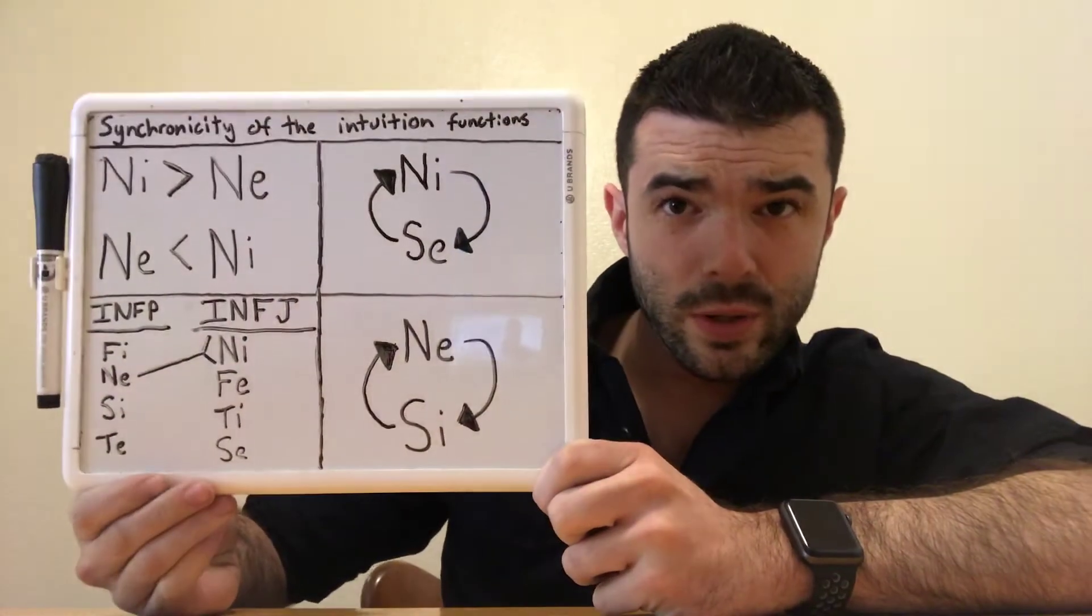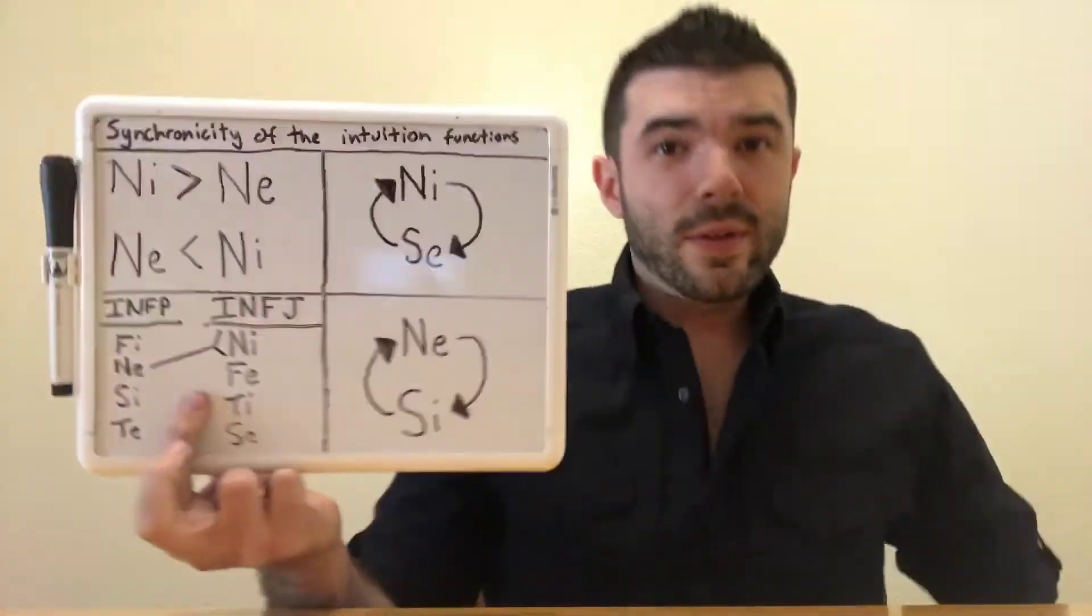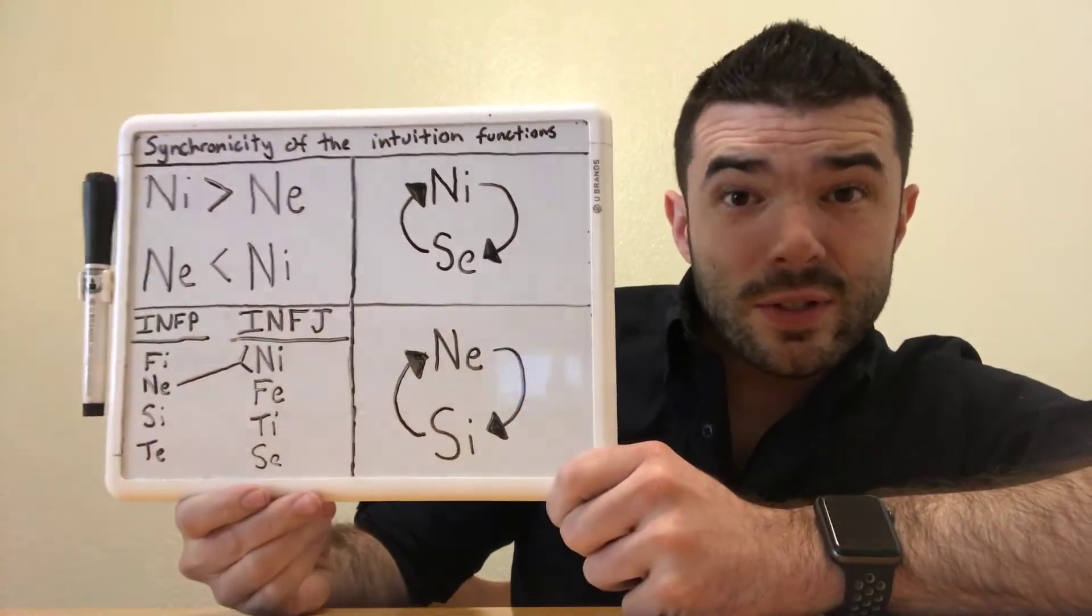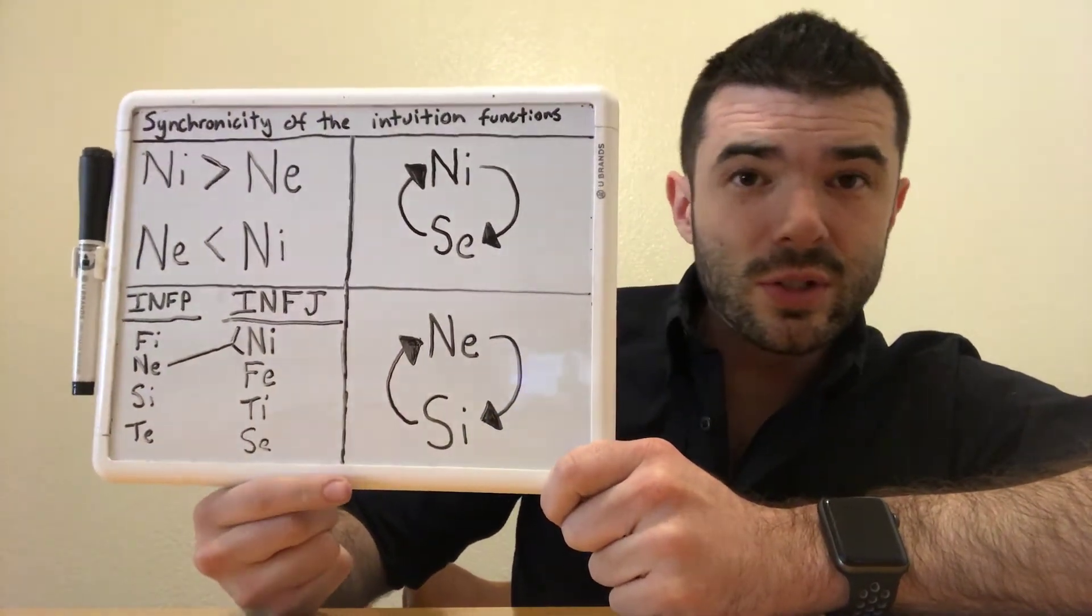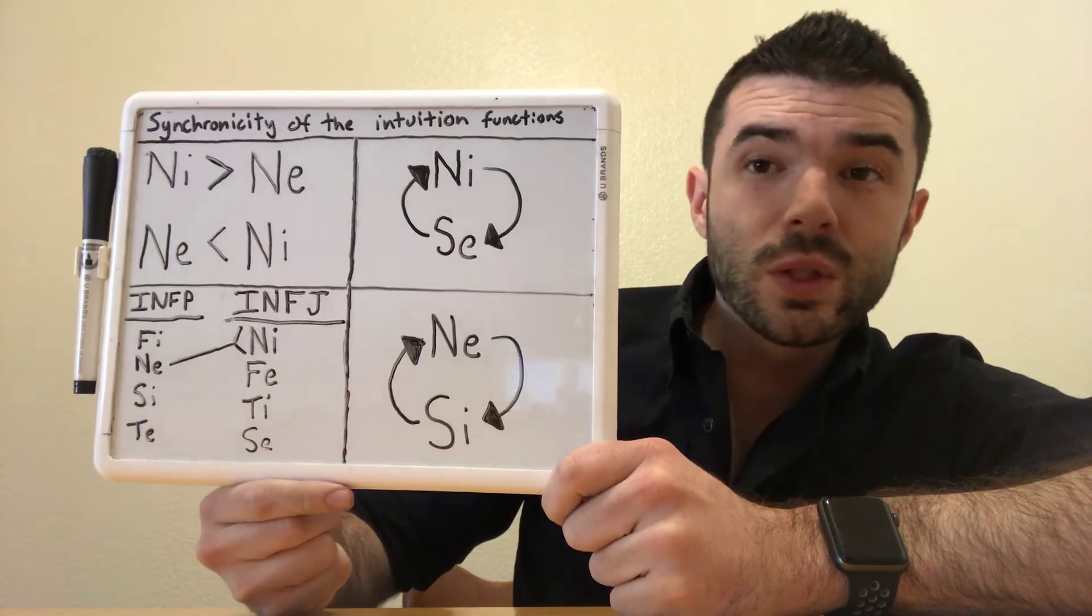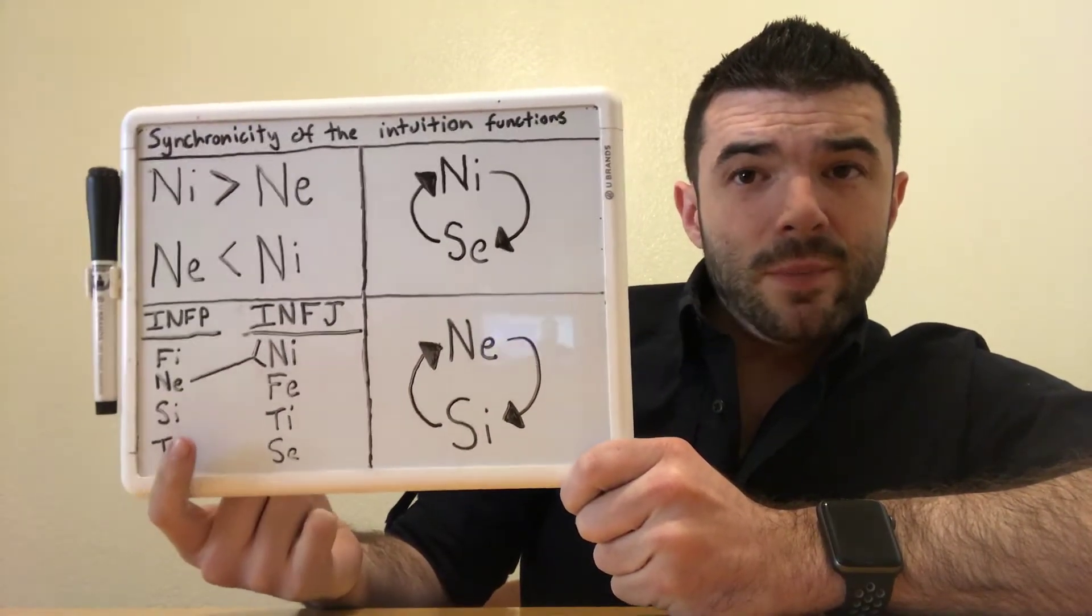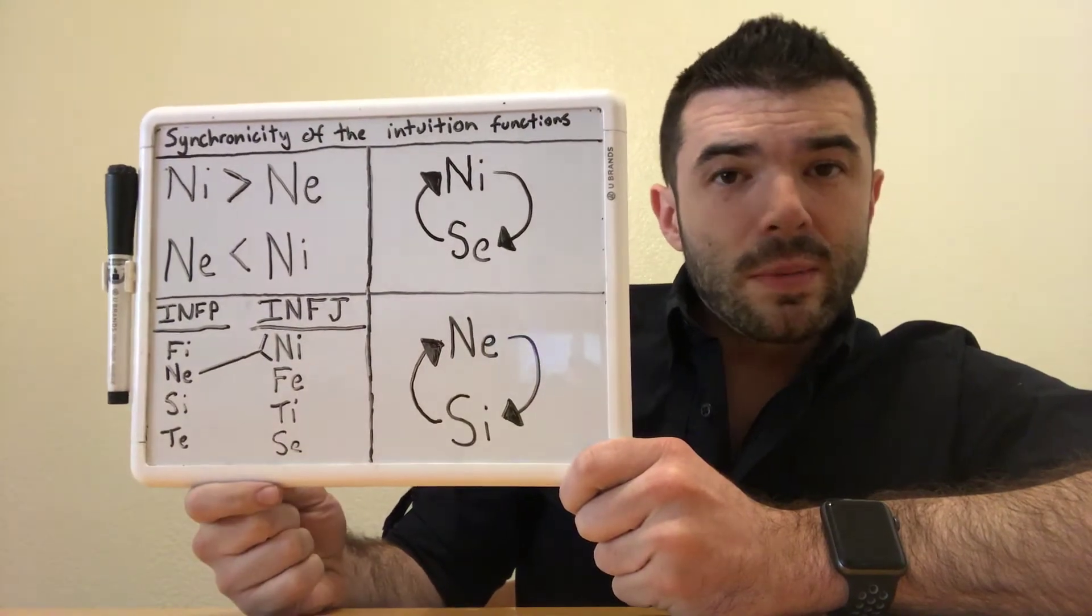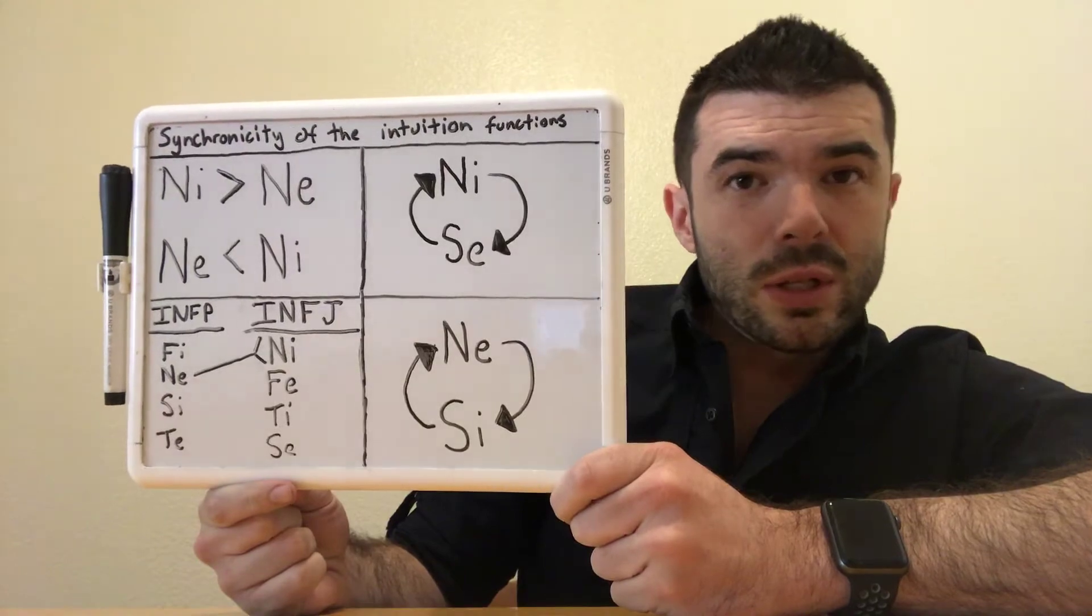With that we're going to be doing the synchronicity of the intuitive functions since I'm an intuitive. Pretty relevant, but then again, this stuff is actually relevant to everybody because everyone has sensing functions and everyone has intuitive functions, it's just which functions are in their ego. So for this example, we're going to be using the INFJ and the INFP types and we're gonna be talking about their perceptional synchronicity with the intuition functions.